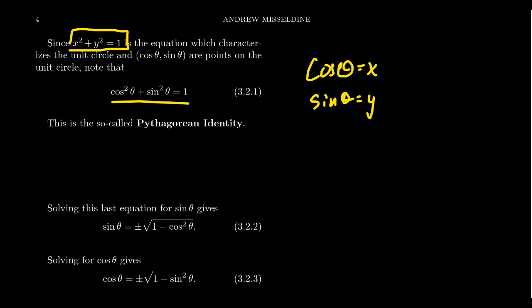This equation x squared plus y squared equals 1, which gives us the unit circle, is really derived from the distance formula, which derived from the Pythagorean equation for right triangles. After all, if you're looking at a point on the unit circle, that means you want all points which are one unit of distance away from the origin. That's where this equation came from.